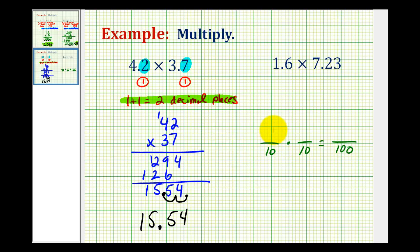Let's take a look at another example here. Let's first count the total number of decimal places to the right of the decimal point. So here we have one, and here we have two. So this product must contain three decimal places to the right of the decimal point.